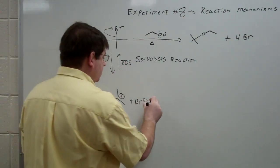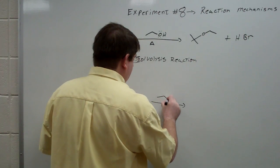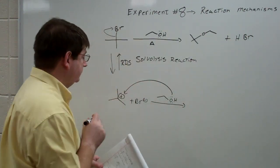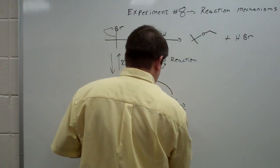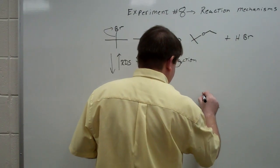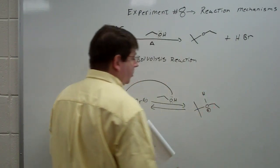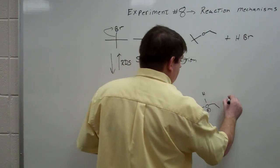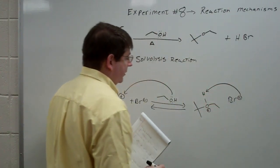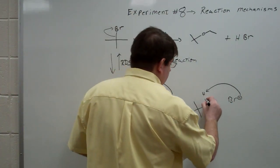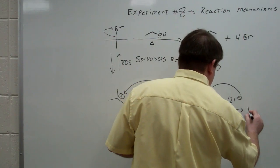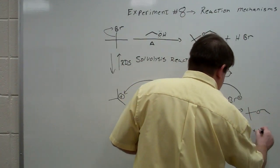And then in the second step, of course, the ethanol attacks the carbocation. And then the bromide leaving group will come in and remove the hydrogen from that positively charged oxygen. The electrons go into oxygen to give us the ether product plus HBr.